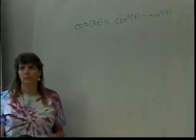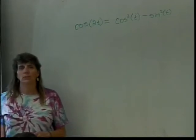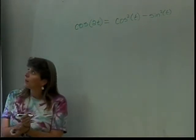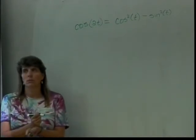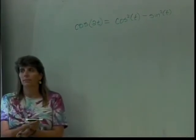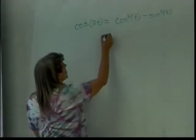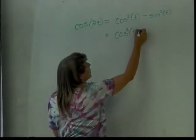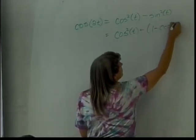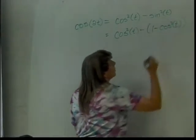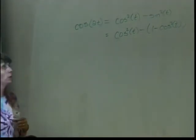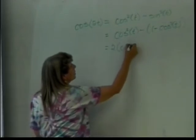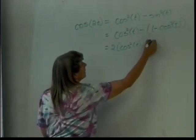What do you think I ought to do? Replace the sine squared with 1 minus cosine squared of t. So replace my sine squared of t with 1 minus cosine squared of t. This will give me 2 times cosine squared of t minus 1.